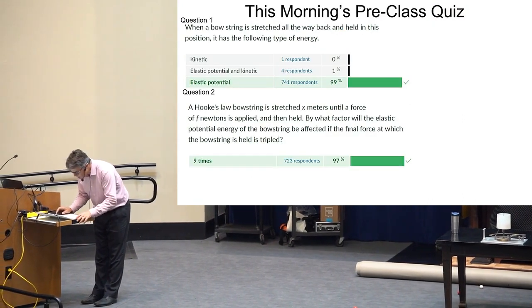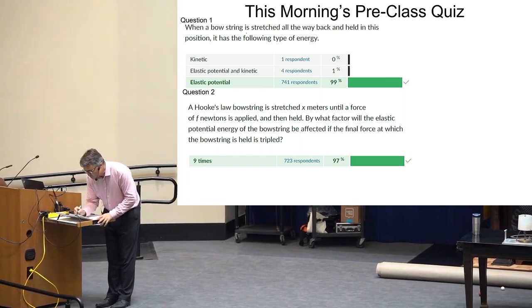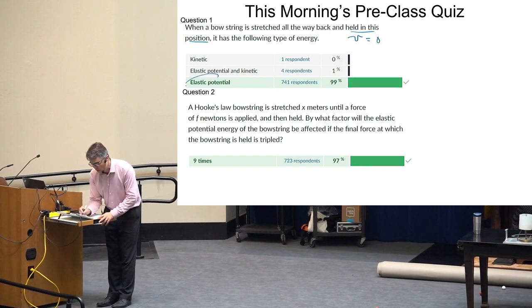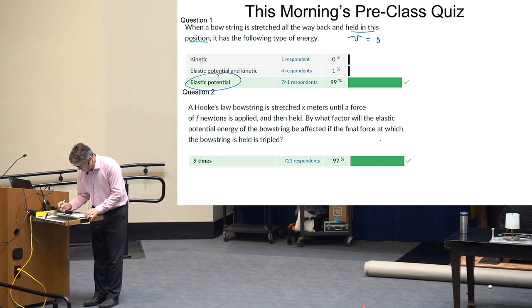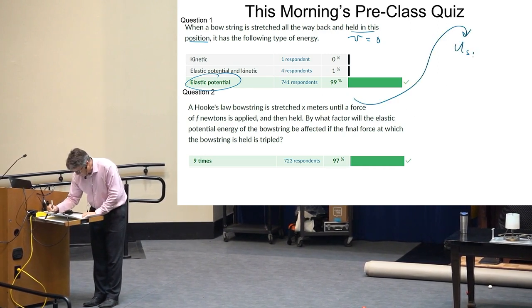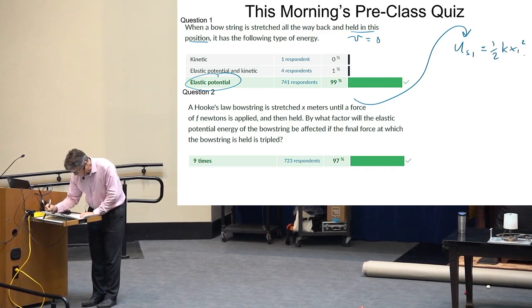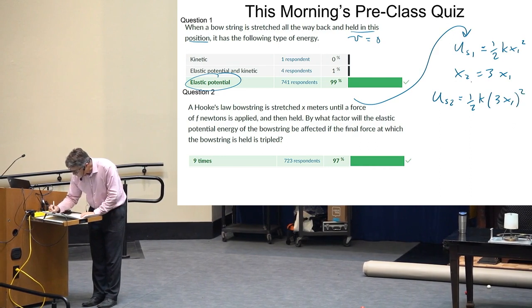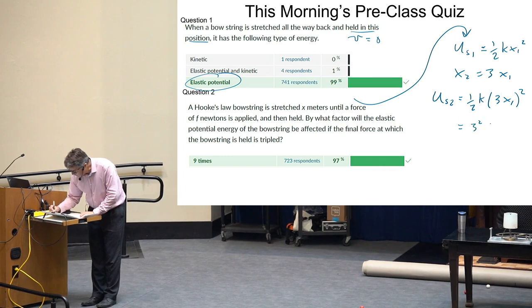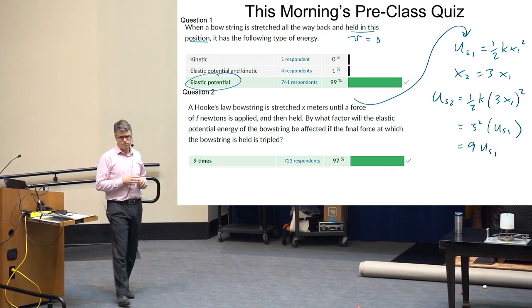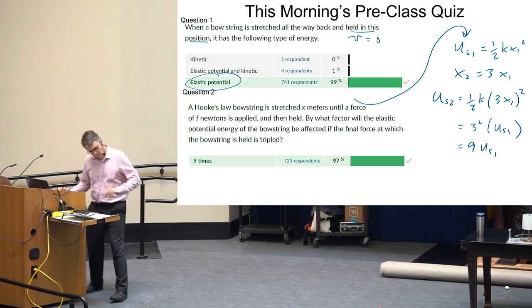Let's do this. This was on this morning's quiz. Just quickly going over this. When a bow string is stretched all the way back and held in this position, this means that V is zero. So there's no kinetic energy. It's all stored elastic potential. And then it says you stretch it by three times as much, and it's still obeying Hooke's law. I would say that, from this one, maybe U_s initial is 1/2 K times X_1 squared. And X_2 is three times X_1. So U_s2 is 1/2 K times 3X_1 squared. You just plug that in there. And then you end up with three squared times U_s1. So it's nine U_s1. So you've increased the potential energy by a factor of nine. A lot of questions about explaining that one. So there it is.